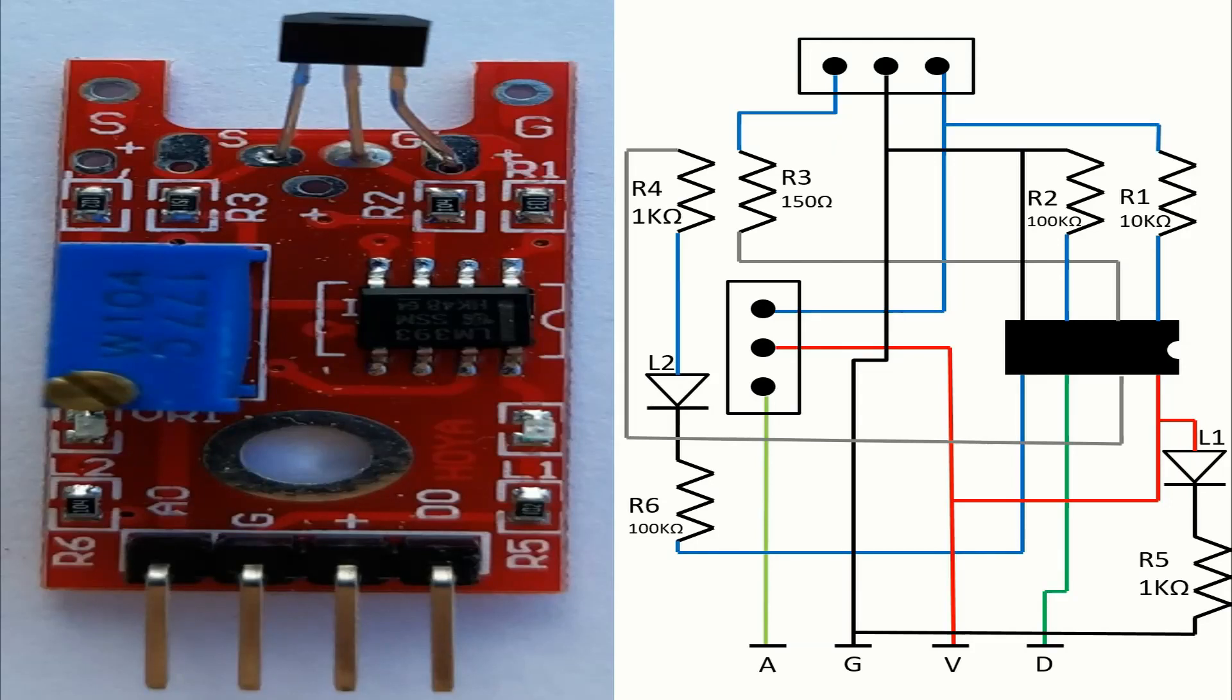Now I will show how these components are connected together. There we have the sensor itself, and of course, the six resistors and the two LEDs.